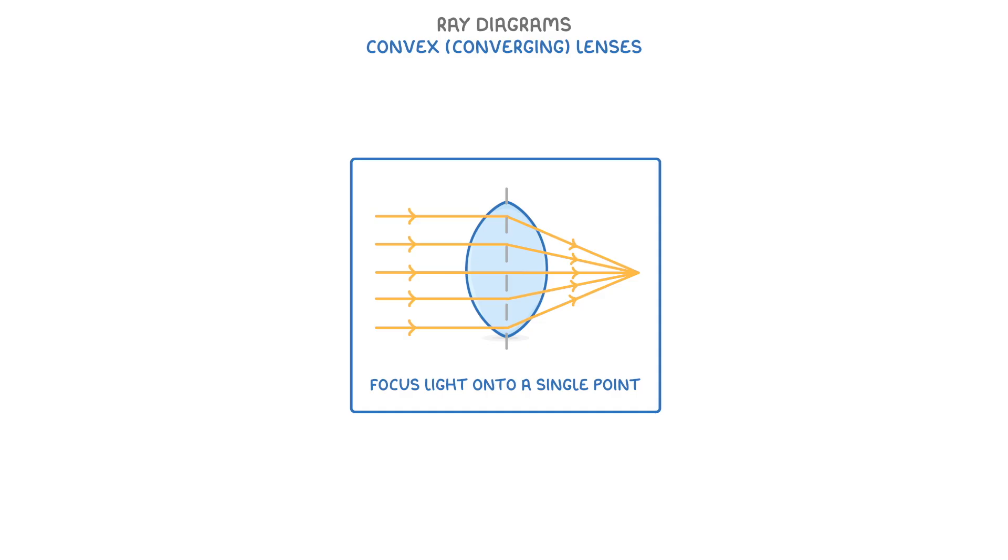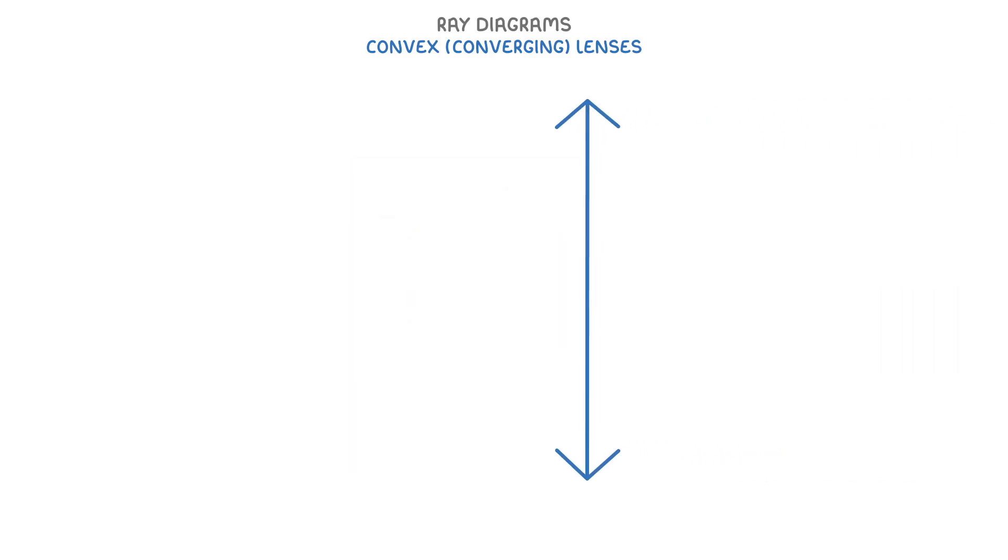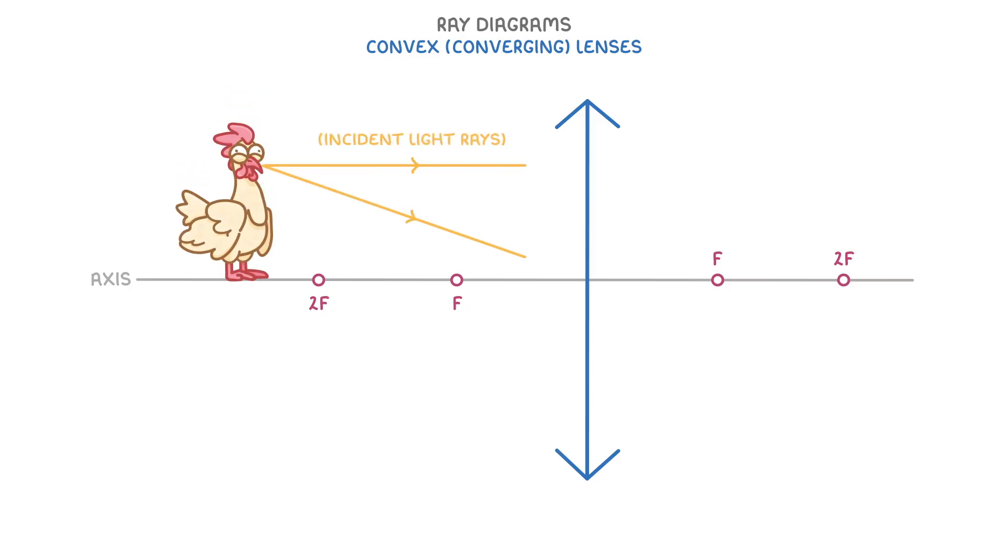Just like before, the first thing we do is set everything up. So with our lens, our axis, focal points, the object, and the two incident light rays.